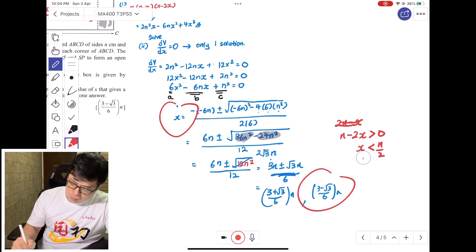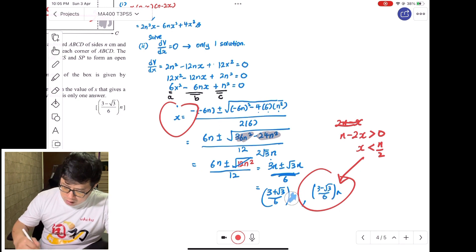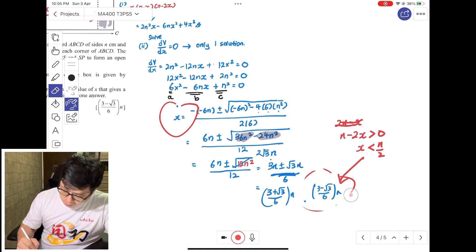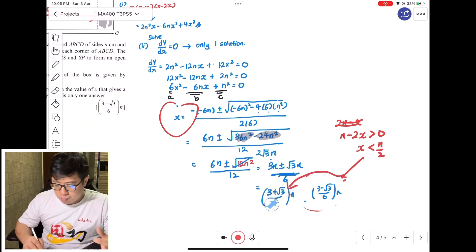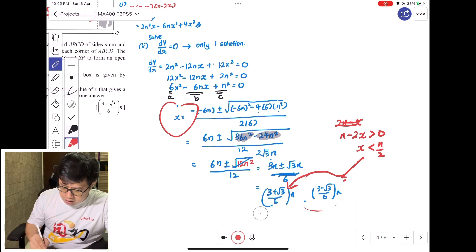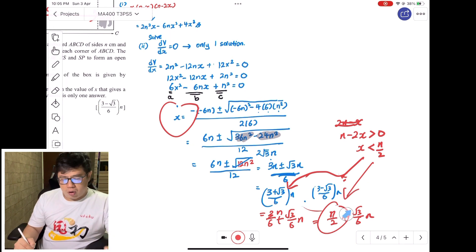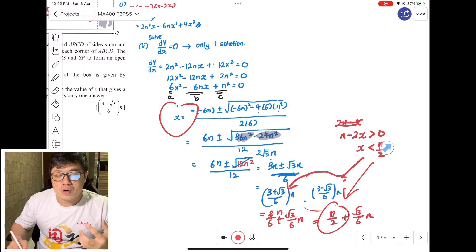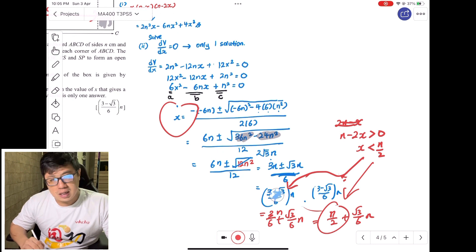If you look at X being too big, this one here is definitely more than N/2. You can see that this is 3/6 plus √3/6 times N, which is N/2 plus √3N/6. This part already suggests that this value here is more than N/2. The rejection is based on the context of the question. It tells us that we have to reject this because X must be less than N/2.